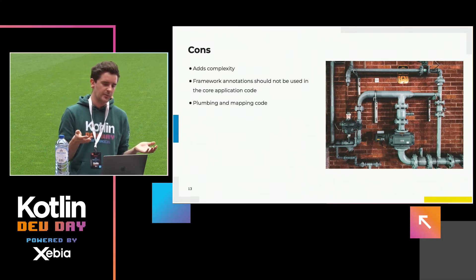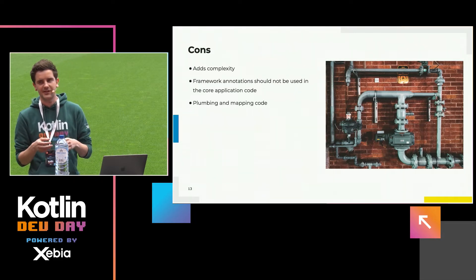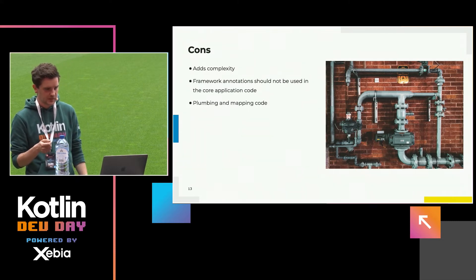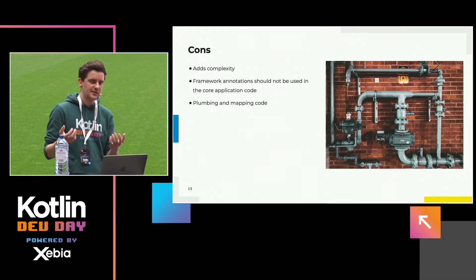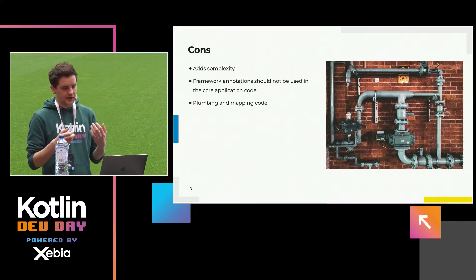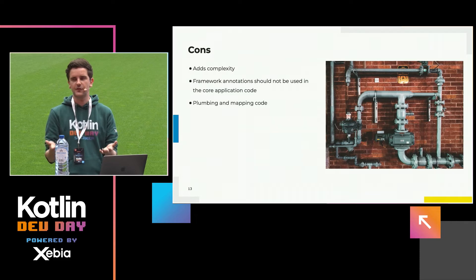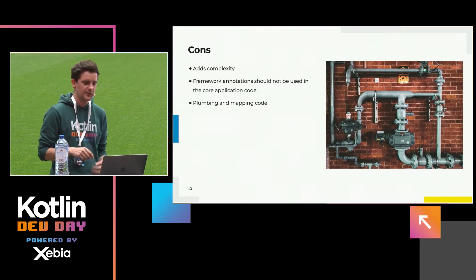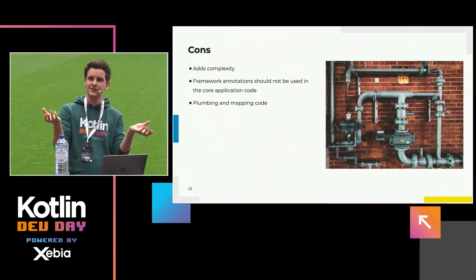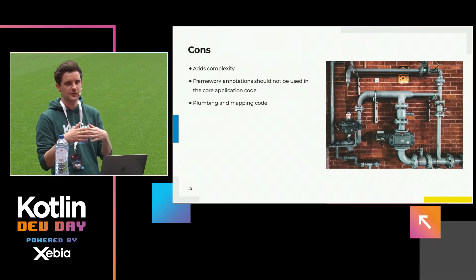There are no silver bullets in software architecture, so there are also drawbacks. The main one is there is a learning curve — a lot of developers know the layer pattern, but the hexagonal or ports and adapters pattern is less familiar, so they have to learn how it works. Another drawback is framework annotations cannot be used in your domain code, making it more cumbersome to use framework features. Also, there will be a lot more plumbing and mapping code because you have to glue your adapters to your domain. I'll show you how Kotlin can help soften this pain.